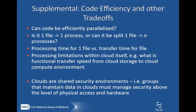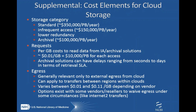The next two slides are somewhat supplemental, but they're important things to think about when transferring and computing on large data sets. Think about efficiently parallelizing your code — cloud providers will sell you effectively as many servers as you want at one time. If you can split processing one file into many processes, this may make things much more efficient. Additionally, it is much cheaper to use dbGaP itself as a storage cloud instead of storing on an S3 bucket or other storage cloud.